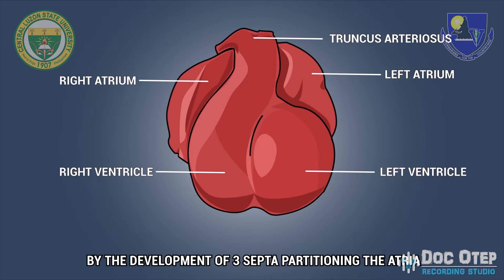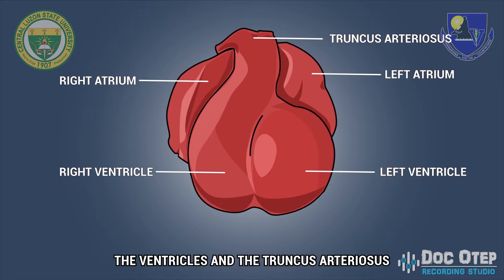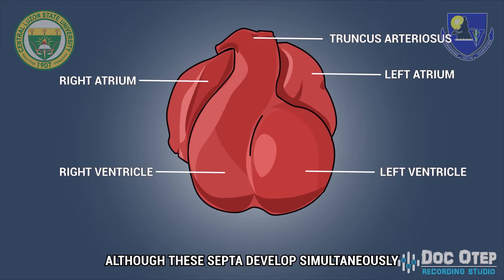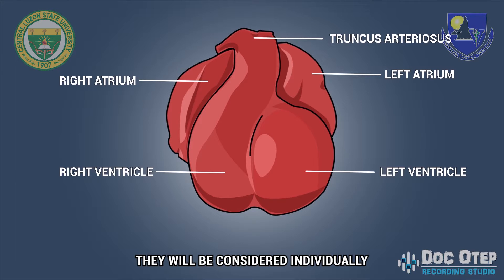A four-chambered heart is formed from this convoluted tube with the development of three septa partitioning the atria, the ventricles, and the truncus arteriosus. Although these septa develop simultaneously, they will be considered individually.